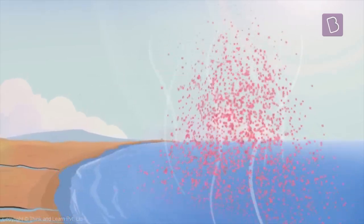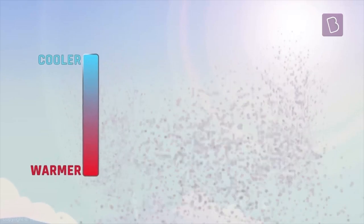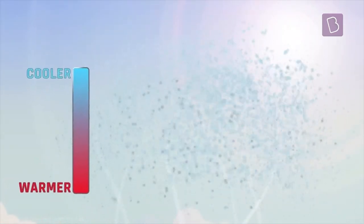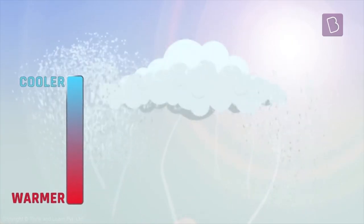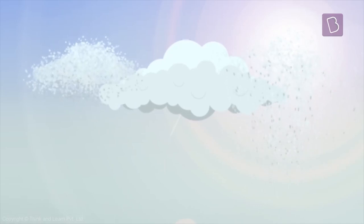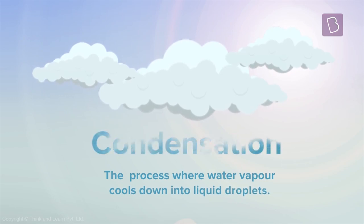The vapor keeps moving upwards and soars high above the ground. In these higher regions of the atmosphere, the temperature is really low. So the water vapor cools down into droplets and forms clouds, some going on to be tens of kilometers long. This process where water vapor cools down into liquid droplets is called condensation.